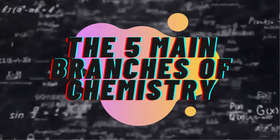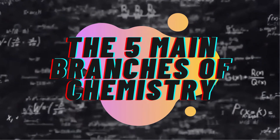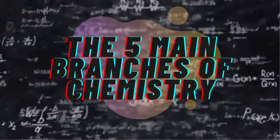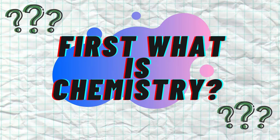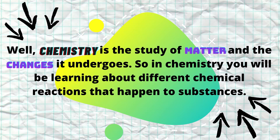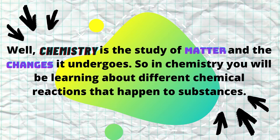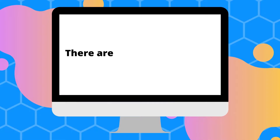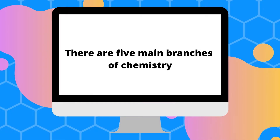The five main branches of chemistry. First, what is chemistry? Well, chemistry is the study of matter and the changes it undergoes. So in chemistry, you will be learning about different chemical reactions that happen to substances. There are five main branches of chemistry.